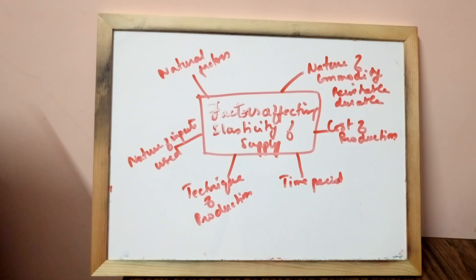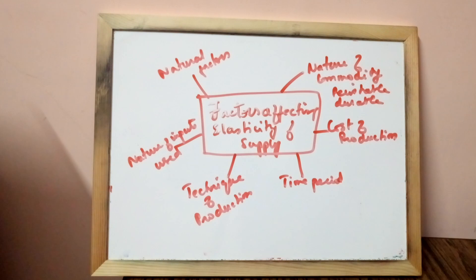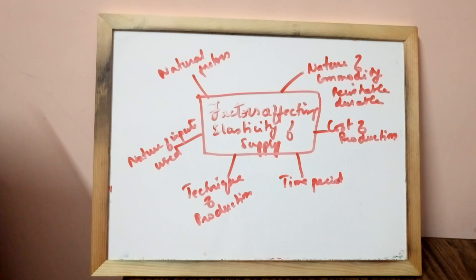Natural factors: commodities whose production depends on natural factors such as weather and rain have inelastic supply — for example, wheat, rice, etc. On the other hand, if production does not depend on natural factors but involves manufactured goods, then supply is elastic.